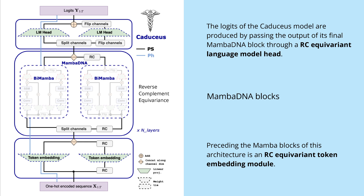The architecture is absolutely identical to a standard LLM — we just have bidirectional Mamba blocks. Given the structural redundancy of the double helix, we are able to implement the reverse complement and produce a Mamba DNA model. As stated, the performance of this system should be significantly better, given the extreme precision needed for genomic sequence analysis.